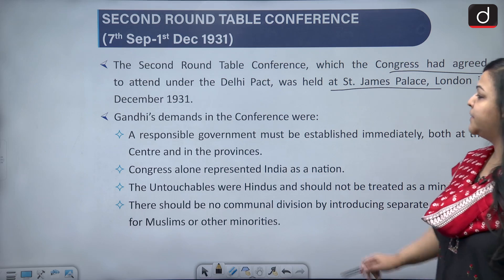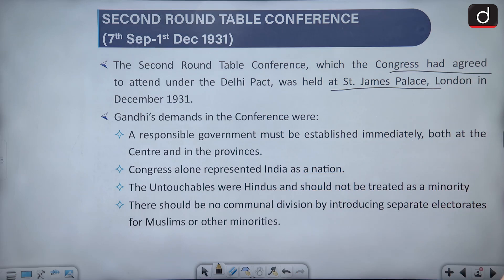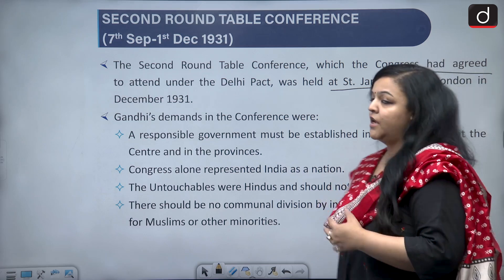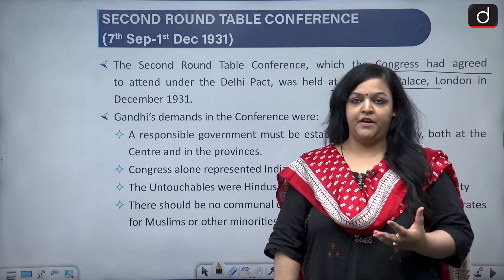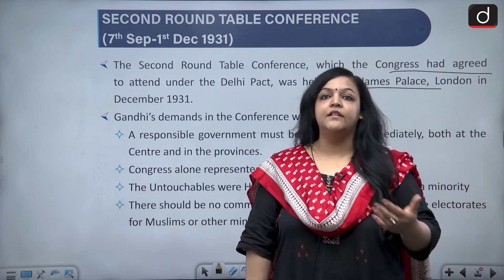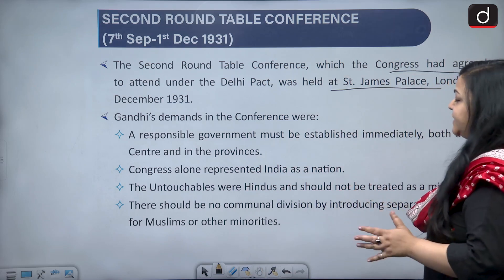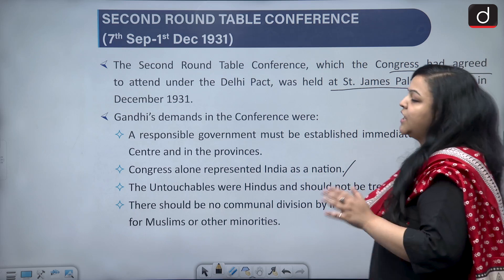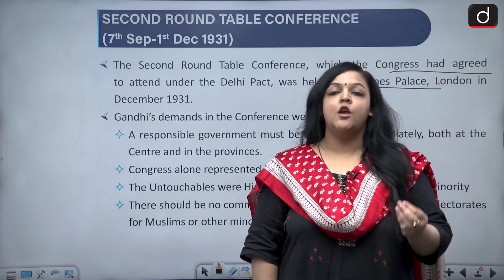Gandhiji's demands at the conference were: a responsible government had to be established immediately, both at the center and in the provinces. A responsible government here means a government which is responsible and answerable to the people of India — not taking decisions without consulting Indians. Congress alone represented India as a nation, and Gandhi wanted the British to recognize this.